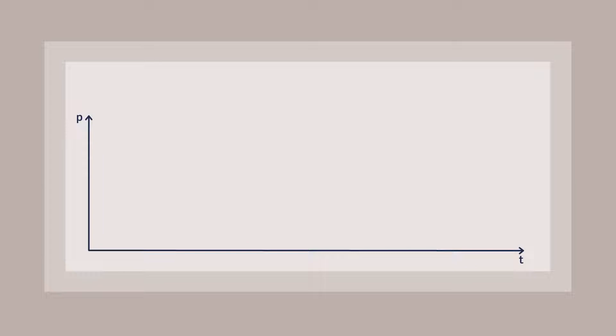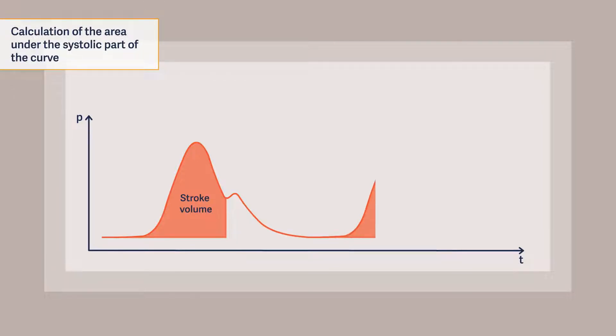The pulse contour analysis involves continuous analysis of the derived arterial pressure signal. In the first step, it determines the area under the systolic part of the curve, which reflects the stroke volume.